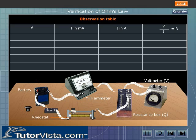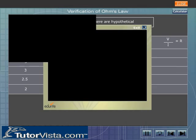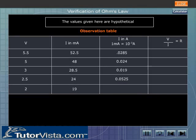Click on the key to close the circuit. Record the values of V and I in the observation table. Now vary the position of the slider of the rheostat and record V and I. Record at least five values of V and I by adjusting the position of the slider of the rheostat. Calculate V by I in each case.